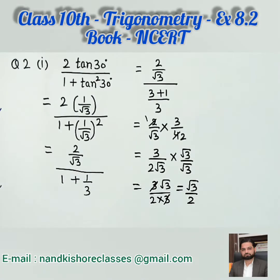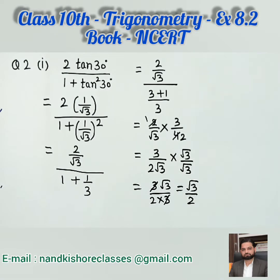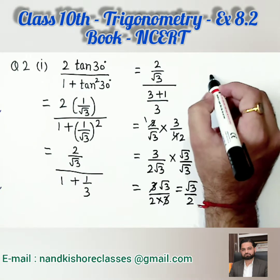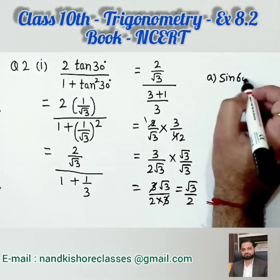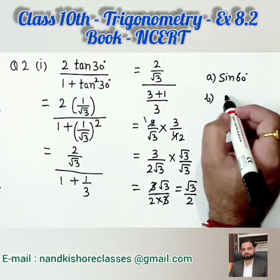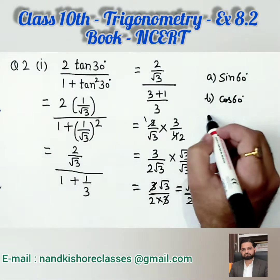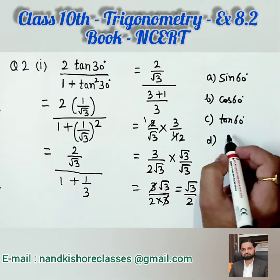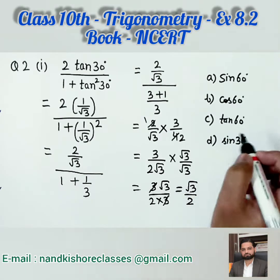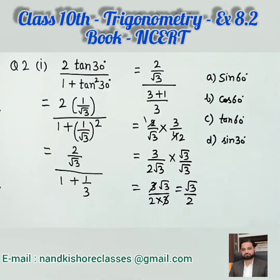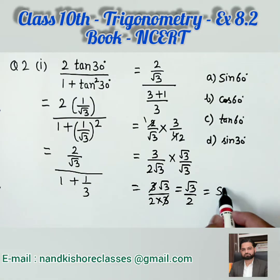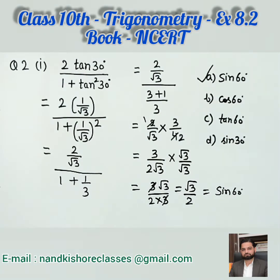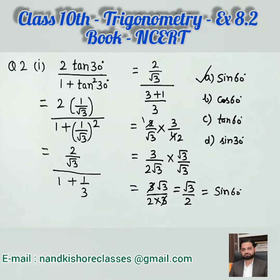If this question comes without options, our answer is root 3 by 2. But here we have various options. Writing them: Option A is sin 60, Option B is cos 60, Option C is tangent 60, and Option D is sin 30. We know that root 3 by 2 is the value of sin 60. So the answer is Option A. I hope you are clear. Let us move to the next part, Part 2.